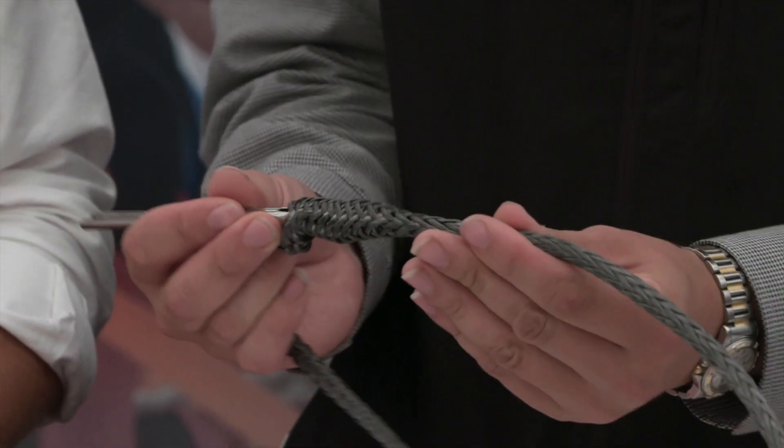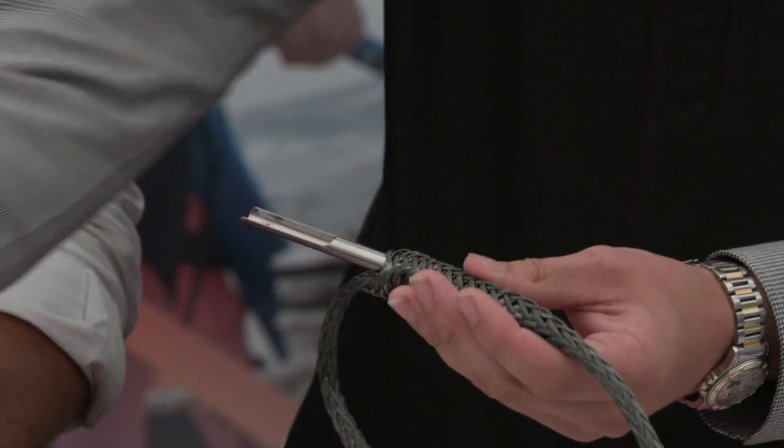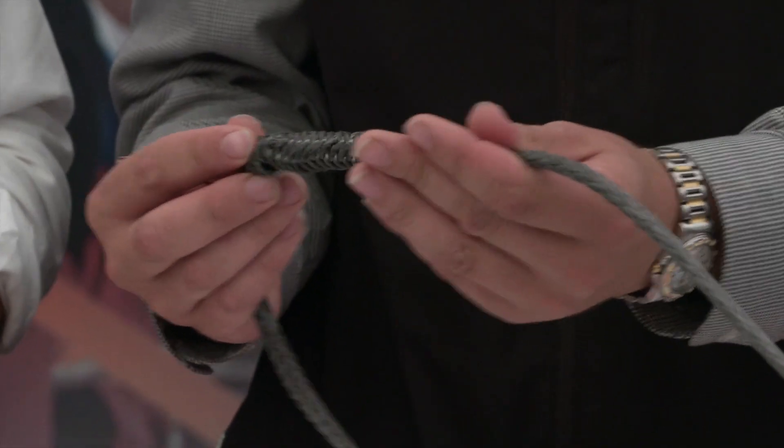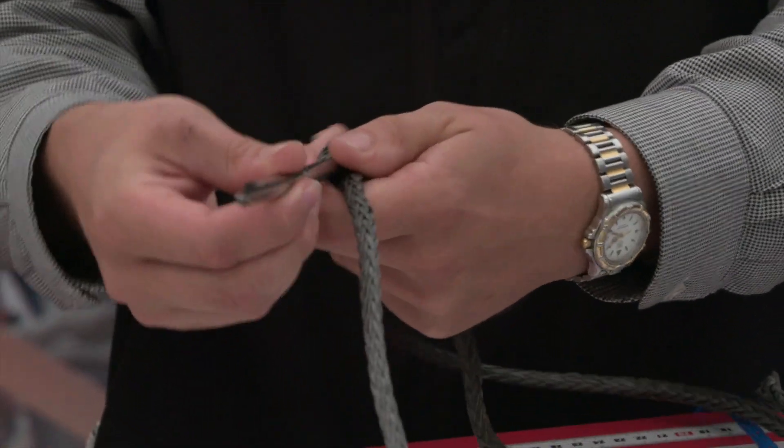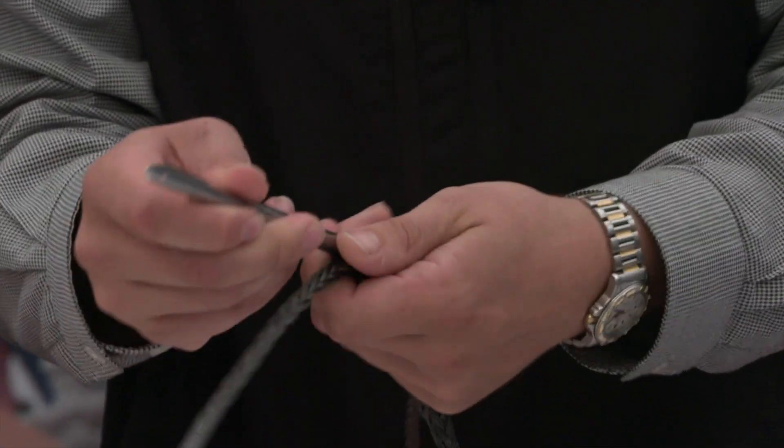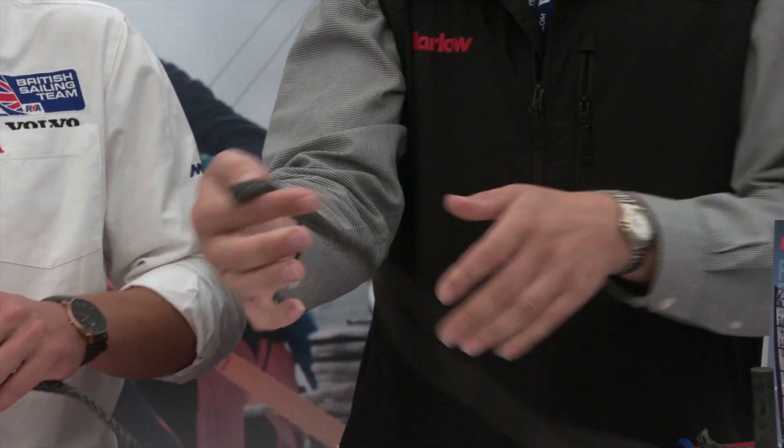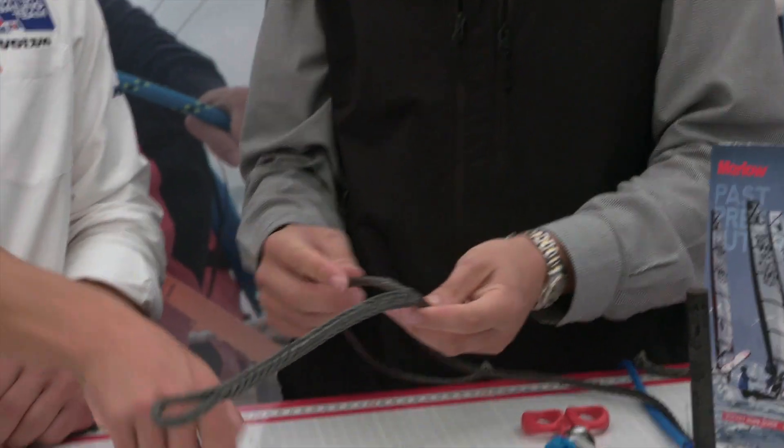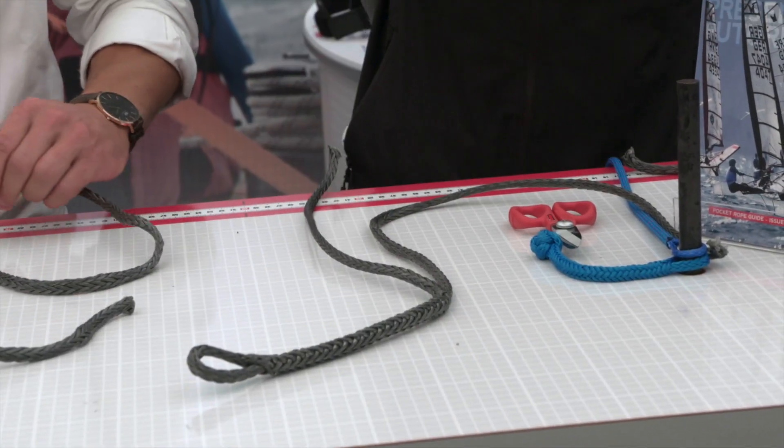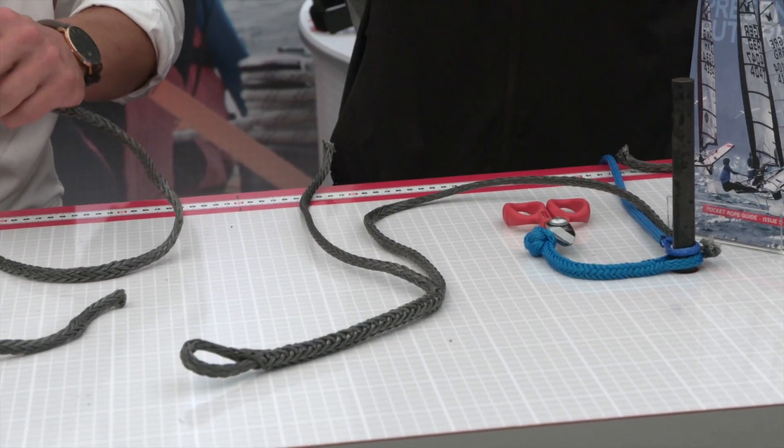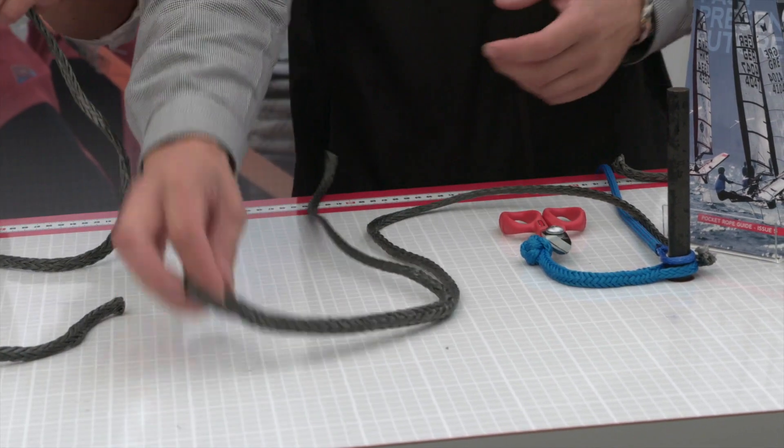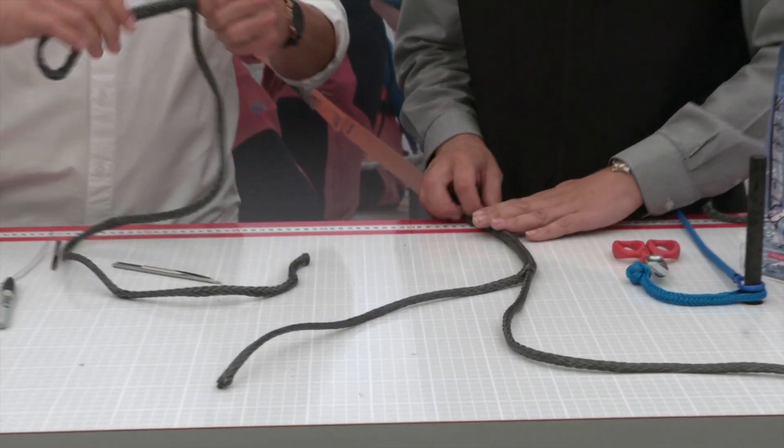So I'm going to get my fid and send it down the center of the Dyneema. You just send it down the length that you want your soft shackle to be. So you're going to end up with a little loop and a section where there's two sets of Dyneema. You want to make sure you leave yourself enough of the two tails to be able to tie your diamond knot.